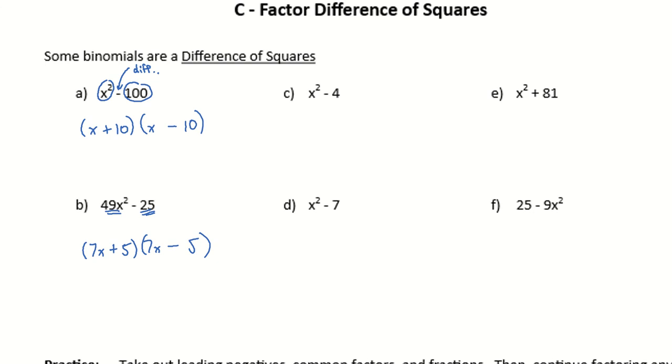For c, x squared minus 4, it's a difference of squares, because we have x times x, or x squared, and we've got 2 times 2, or 2 squared gives me 4. One of them is plus, one of them is minus. It doesn't matter which one goes first.